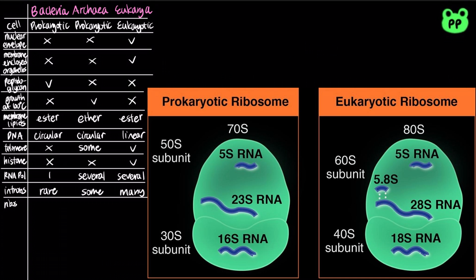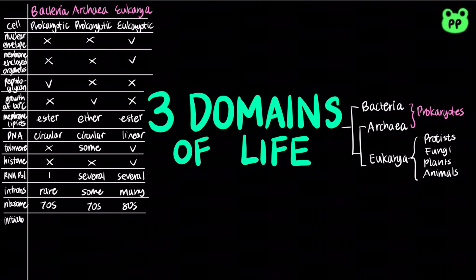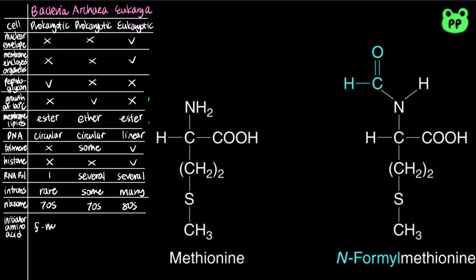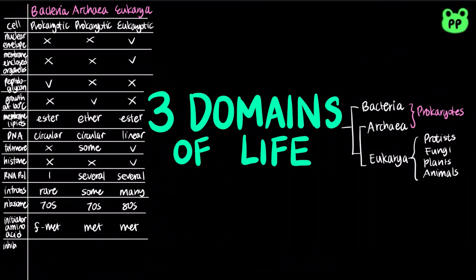In terms of translation, both bacteria and archaea have 70S ribosomes, which are RNA and associated proteins that function to synthesize proteins. Eukaryotes have 80S ribosomes. The initiator of protein synthesis in bacteria is N-formyl methionine, whereas it is methionine for both archaea and eukaryotes. Lastly, only bacteria are inhibited by antibiotics, whereas archaea and eukaryotes aren't.